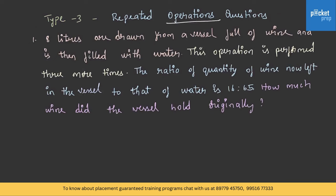Type 3: repeated operations questions. For example, 8 liters are drawn from a vessel full of wine and then filled with water. This operation is performed three more times. The ratio of quantity of wine now left in the vessel to that of water is 16:65. How much wine did the vessel hold originally? In this case, some operation is performed n number of times and we have a formula for this type of question.